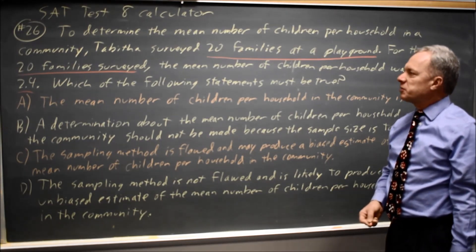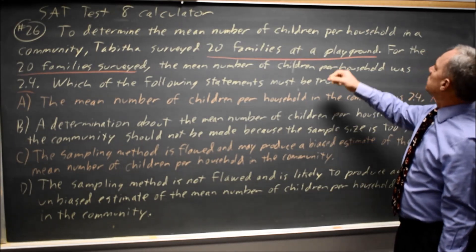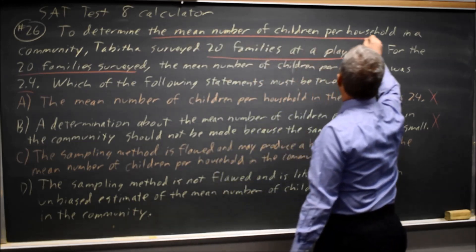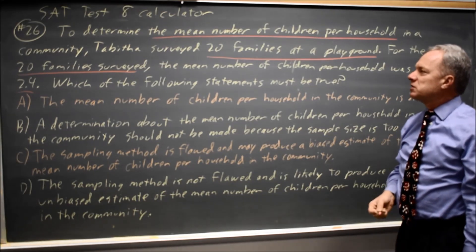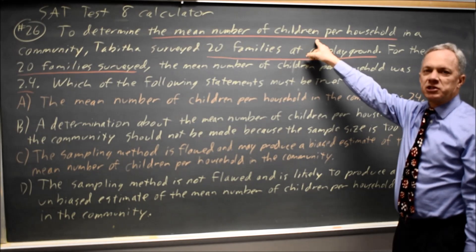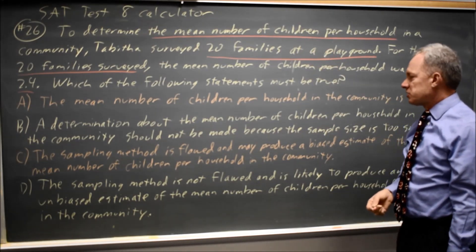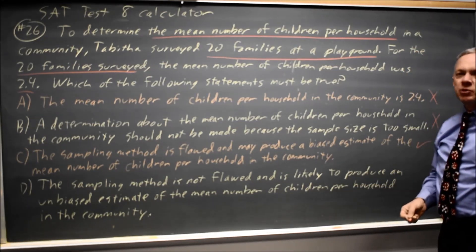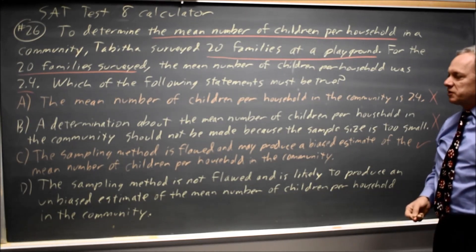To produce an accurate estimate, you would want your sample to be representative of the community if you want the mean number of children per household in the community. Since we're not sampling a representative sample, it's reasonable to infer that those at a playground are more likely to have children than the typical household, and possibly even more children than the typical household. So this sampling method is flawed and this is probably the correct answer, but always check all your choices, especially when interpreting surveys and experiments.